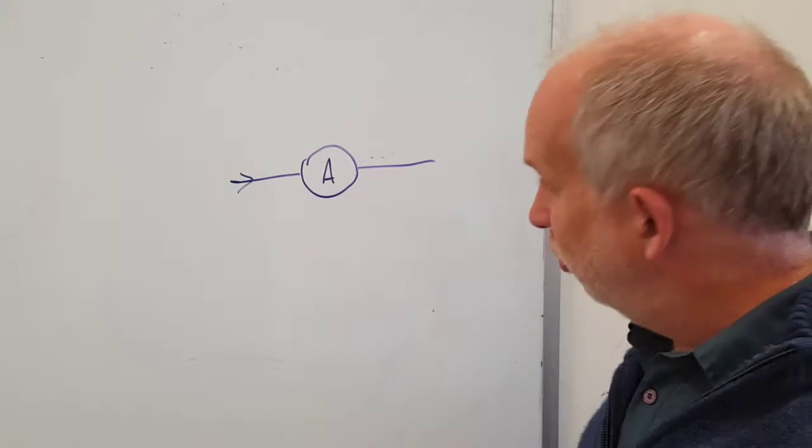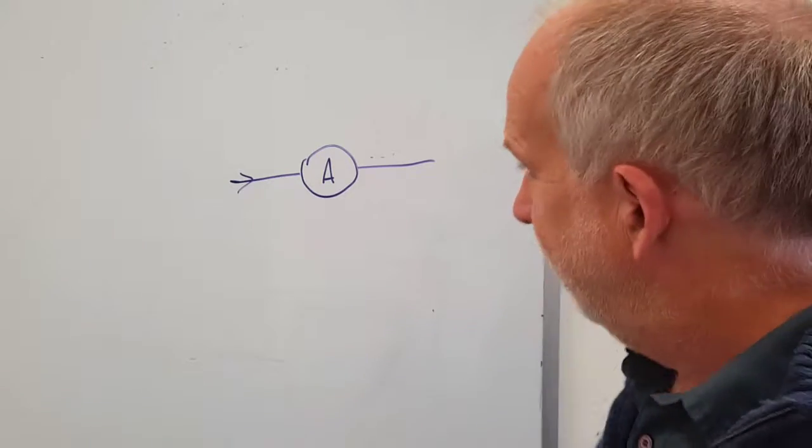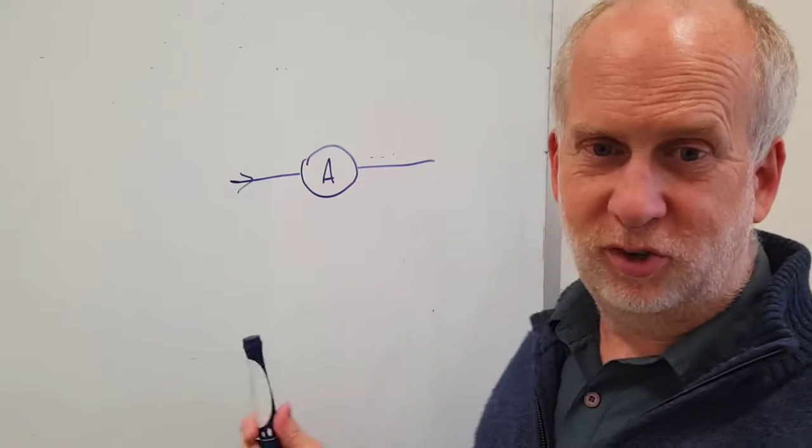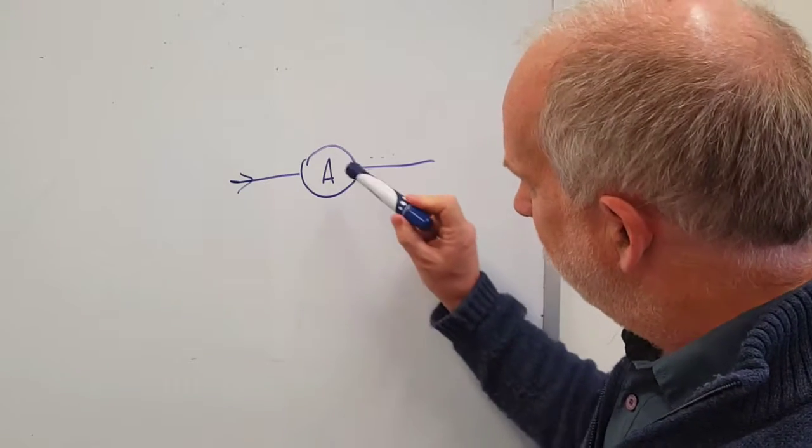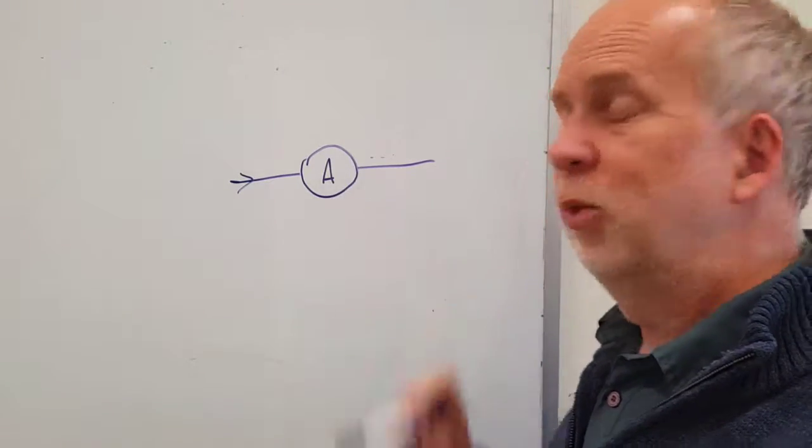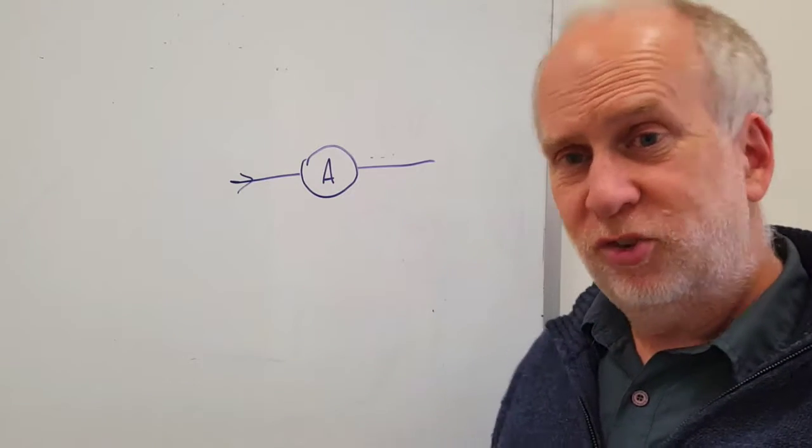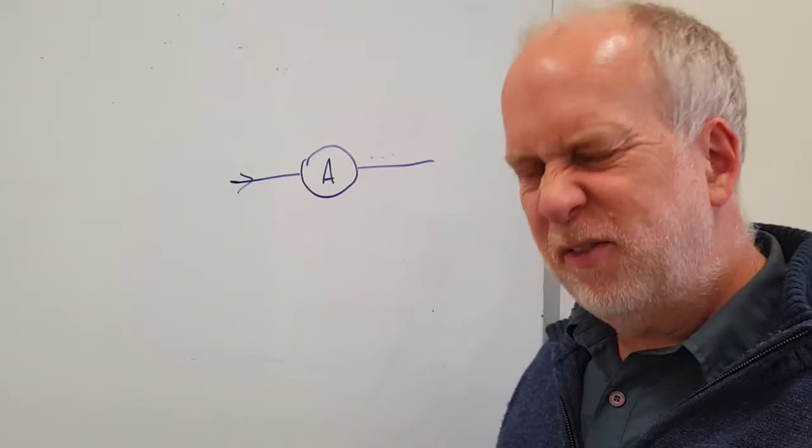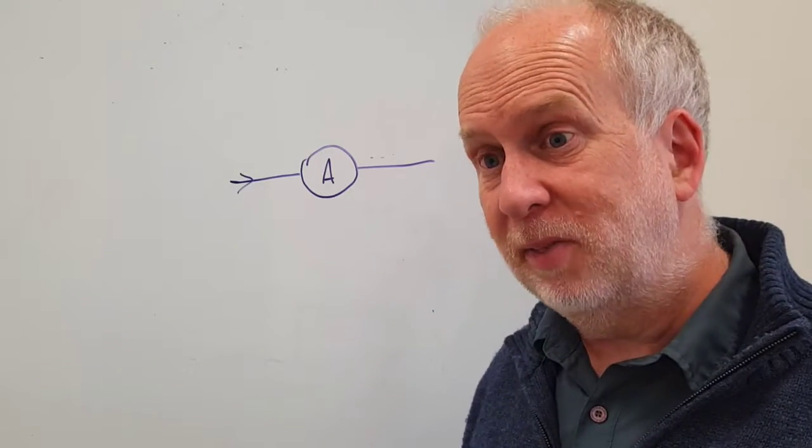Real ammeters don't quite do that. They have to disturb the current a little bit to measure what's there. So in practice these have a bit of resistance and so they won't quite leave the circuit undisturbed. When the ammeter is inserted, usually the current will go down very slightly. But most ammeters these days are pretty good, so the disturbance is quite small, so they could be a fairly good estimate of what the current would have been had the ammeter not been there.